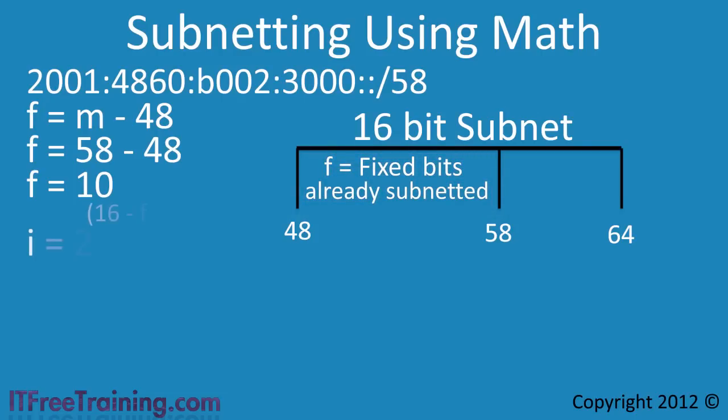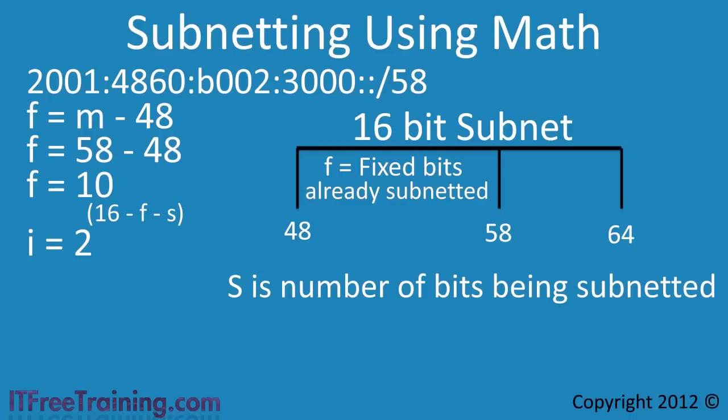The next formula works out the increment value between different address ranges. This function is I equals 2 to the power of 16 minus F minus S. The S in the formula is the number of bits you are adding to the prefix, in this case 3.